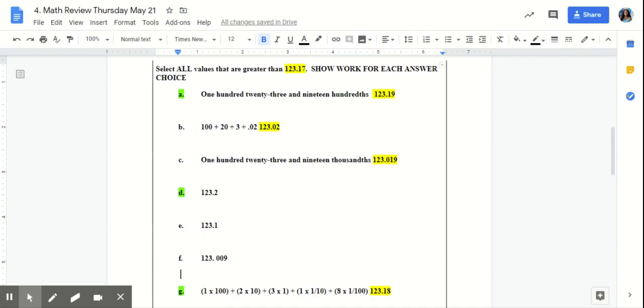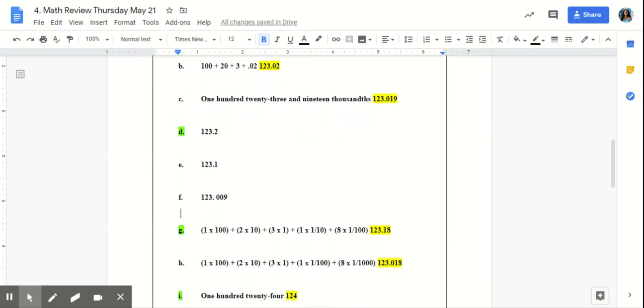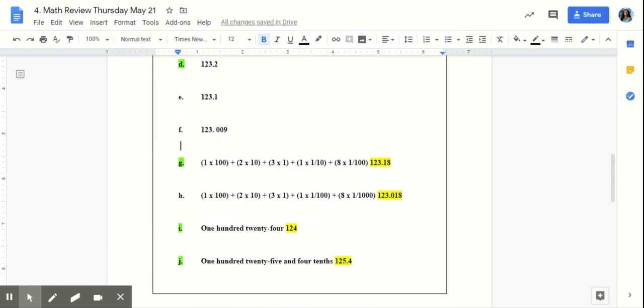If you stacked your numbers correctly, you would have gotten the correct answer choices of A, D, G, I, and J. All those numbers are greater than 123.17.